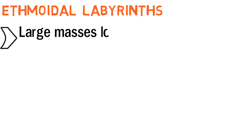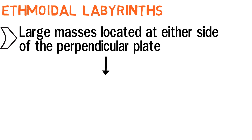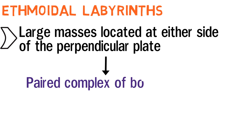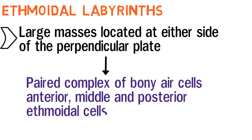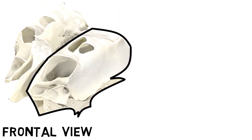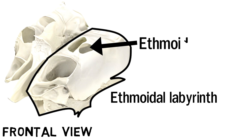The last part of the ethmoid bone are the two ethmoidal labyrinths. These are large masses located at either side of the perpendicular plate, and they contain paired complex of bony air cells — anterior, middle and posterior ethmoidal cells. This is the frontal view of the bone, and the part outlined is the ethmoidal labyrinth. These holes are the bony air cells, also called the ethmoidal air cells. The function of the ethmoidal air cells is associated with warming, humidifying and filtering of the inhaled air.